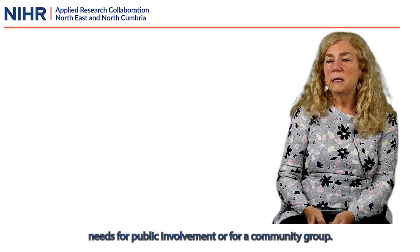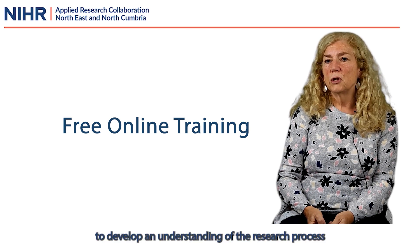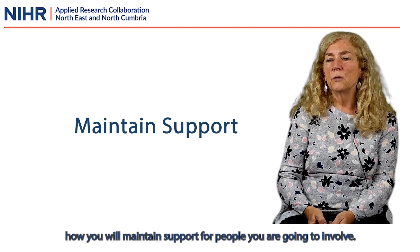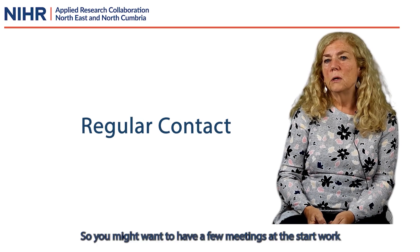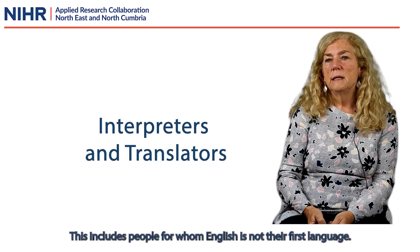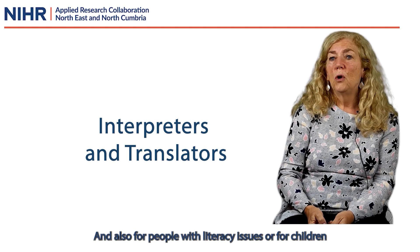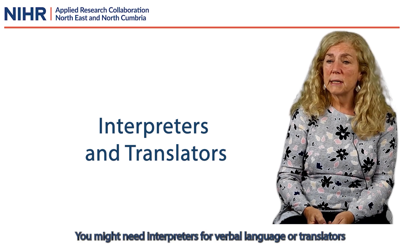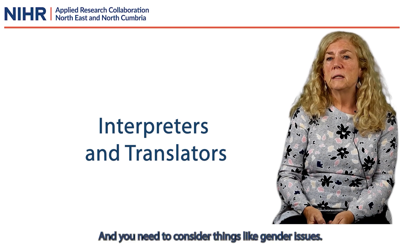Please consider whether there are any training or support needs for public involvement or for a community group. There is lots of free online training available to help people to develop an understanding of the research process and about what it means to be a community or public partner in research. Also think about how you will maintain and support the people that you are going to involve. One meeting every six months won't ensure they feel part of a team, so you might want to have a few meetings at the start of the work and then some ongoing email updates between meetings just to keep everyone informed about progress. You will need to think about language — this includes people for whom English is not their first language, people who use British Sign Language, and also people with limited literacy issues, or for children and young people, age-appropriate language. You might need interpreters for verbal language or translators for written language. You need to think about who to approach, how to access people with the right levels of qualification and skills, and you need to consider things like gender issues.